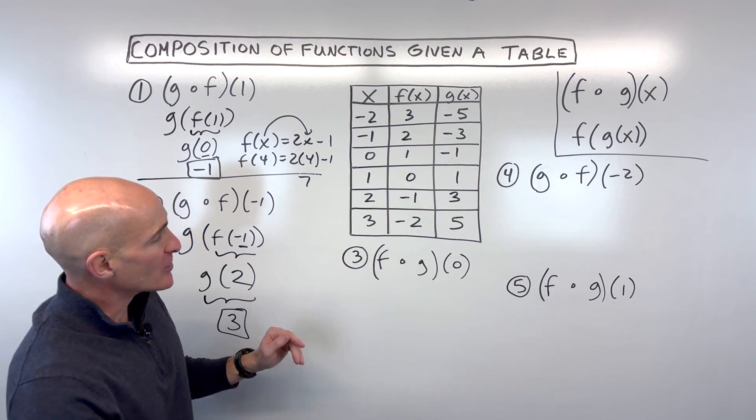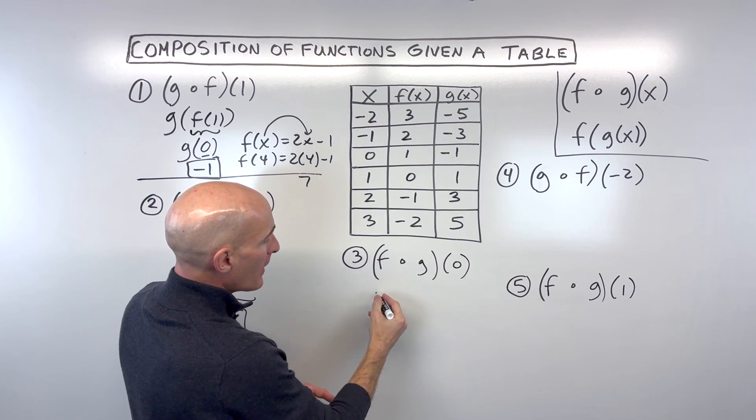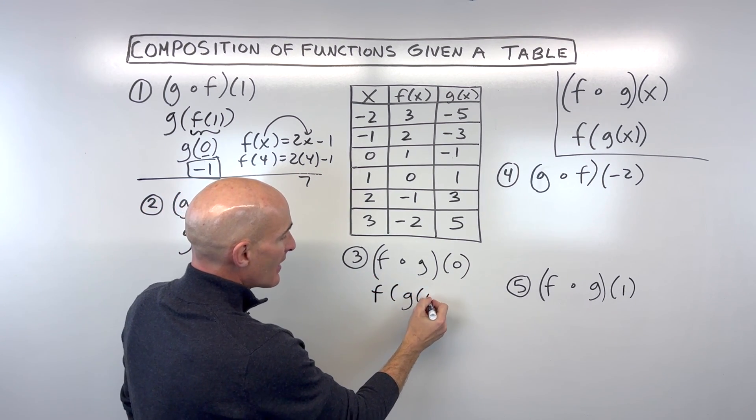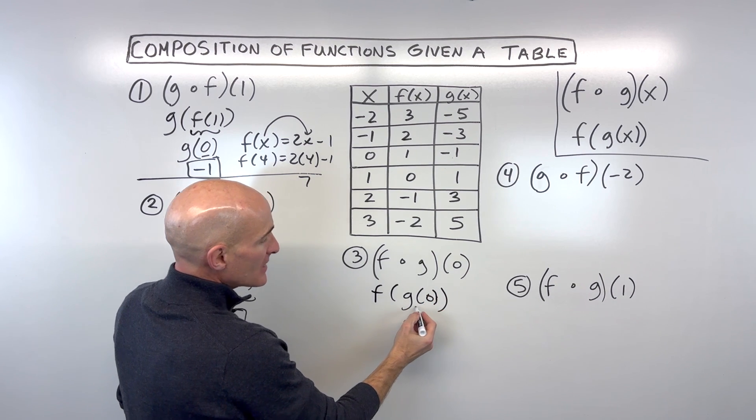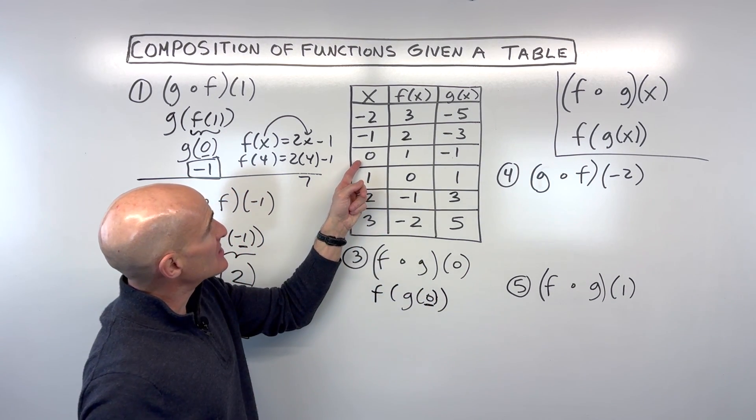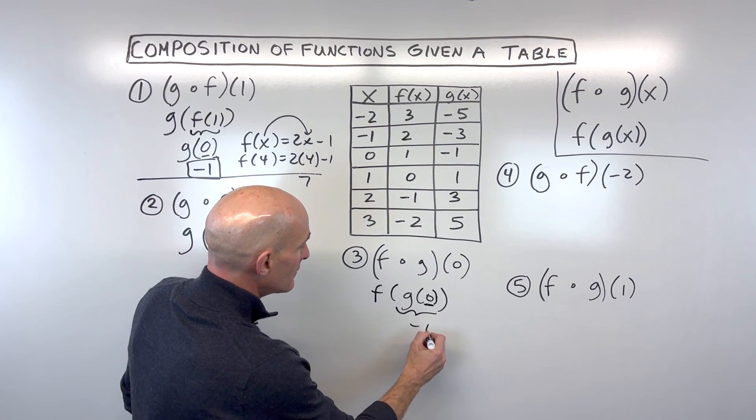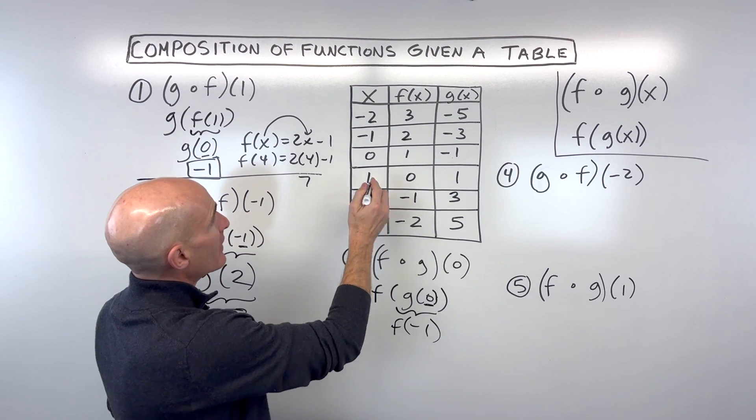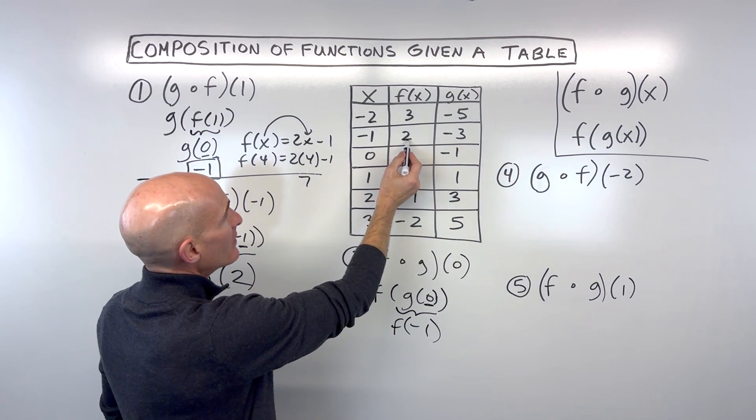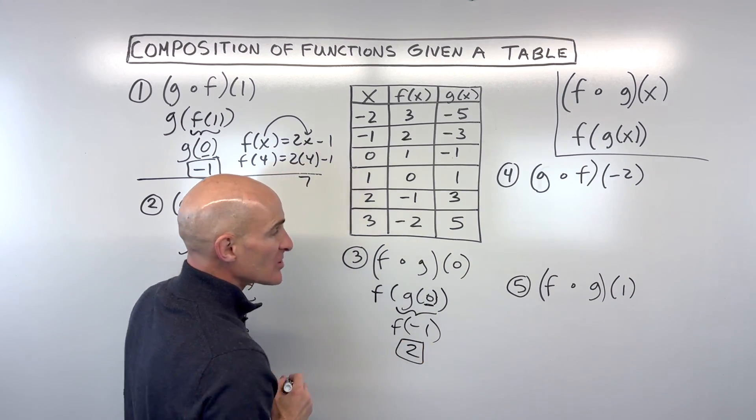Maybe you can try this one if you're getting the feel for it: f of g of zero. I like to rewrite it as f of g of zero, starting from the inside, working our way out. So when x is zero, the output in our g function is negative one. That negative one becomes the input in our f function. So if x is negative one, our y value or output is two. And we solved it.